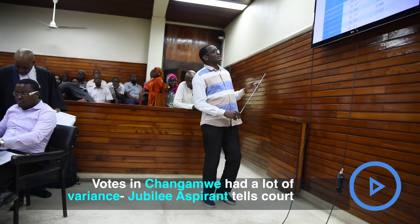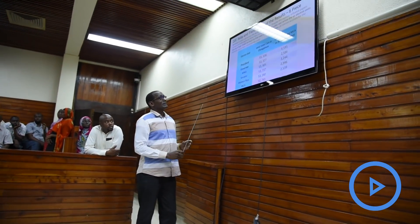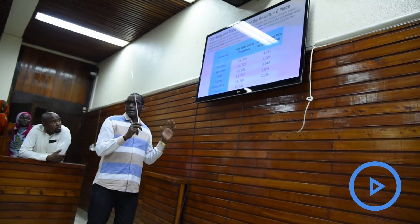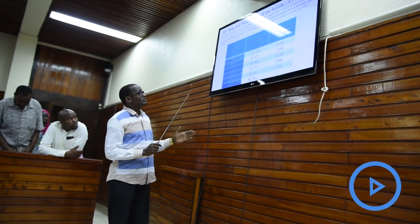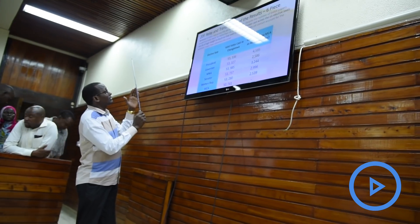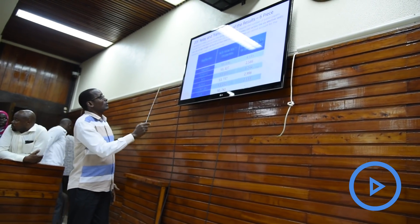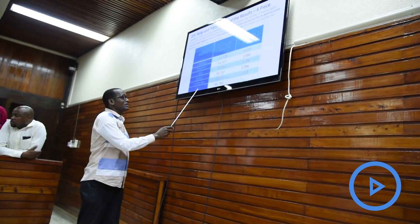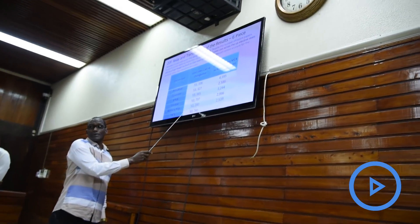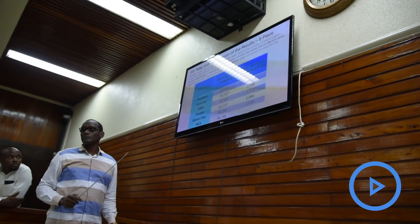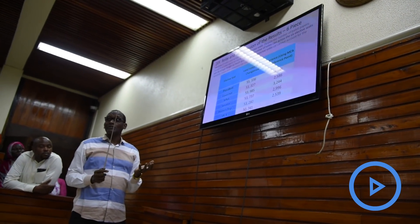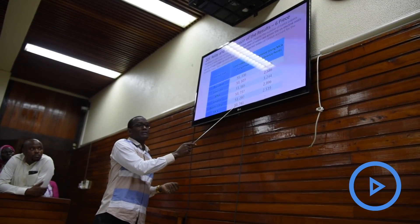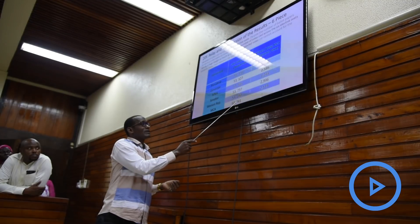Your Honor, this clearly shows that the votes that were cast in Changamwe were not consistent — there were a lot of variants. If maybe we take an MCA as a base point: in the whole of Changamwe, after counting the votes, MCA had 50,741.